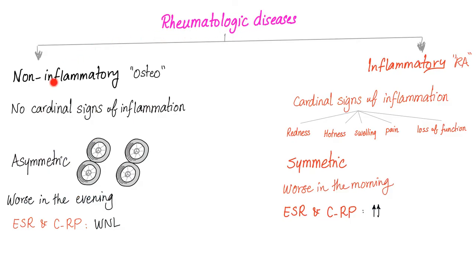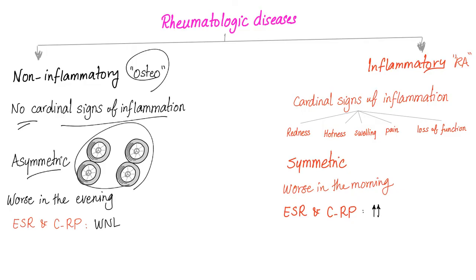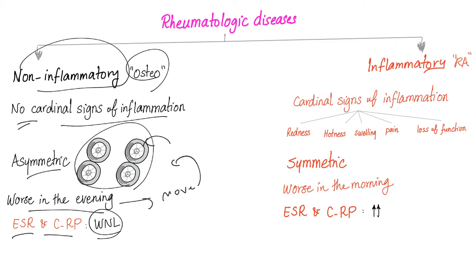Non-inflammatory arthritis such as osteo has no cardinal signs of inflammation, because there is no inflammation. It's asymmetric because you don't wear out your tires at the same rate. Pain worsens in the evening as the day progresses — more movement, more wear and tear. ESR and CRP are within normal limits, and so is every acute phase reactant, because it's a non-inflammatory arthritis.